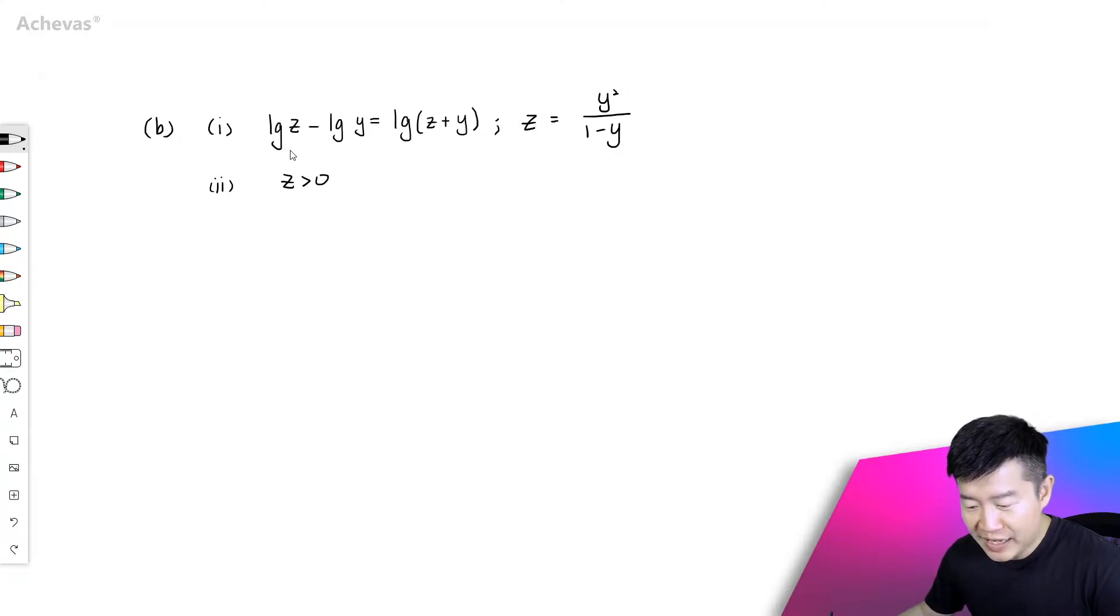And we are supposed to explain clearly why y, this y over here, is between 0 to 1. First of all we can see that y is within the log function so this explains to us that y must be bigger than 0.